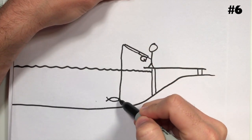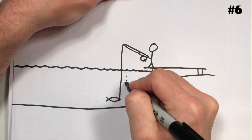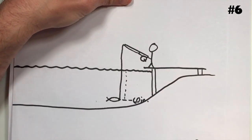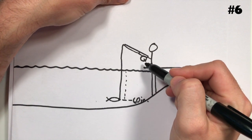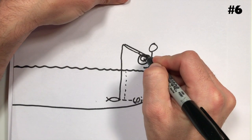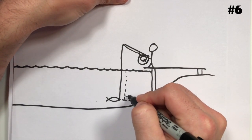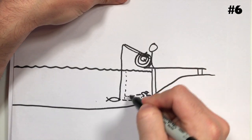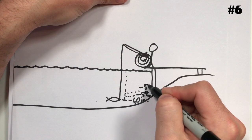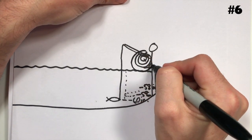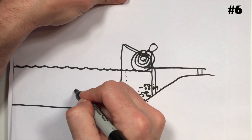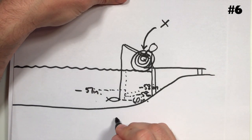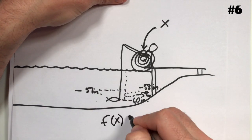We've got a fisherman with a fish on the line. The fish is currently 60 inches below the waterline — at a depth of negative 60 inches. To bring that fish up, he needs to turn the reel. Turning the reel one time, the fish moves up to negative 59 inches. Turning it again, the fish moves up to negative 58 inches. Turning it a third time, the fish moves up to negative 57 inches. If x is the number of turns of the fishing reel and f of x is the depth of the fish.